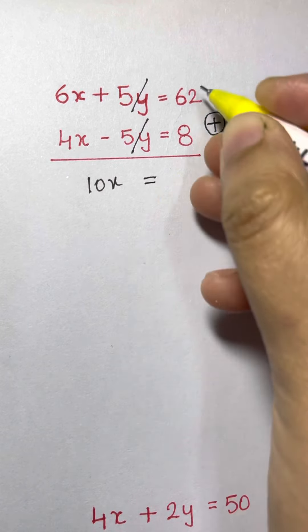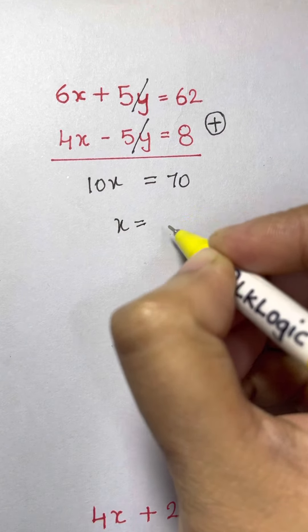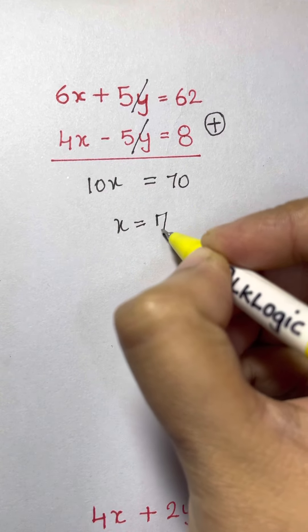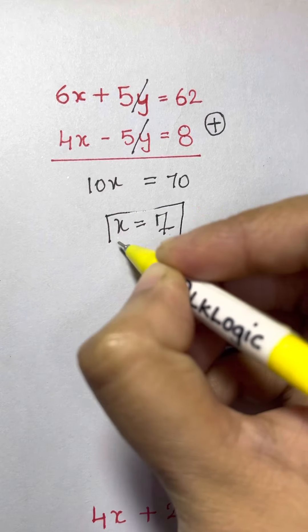So here we have x is equal to 70 divided by 10, that is 7. So x is equal to 7.